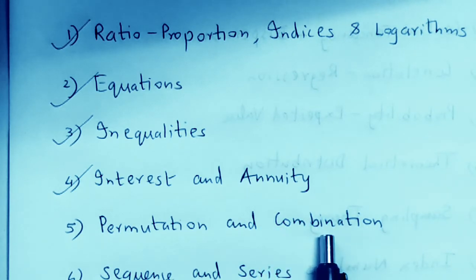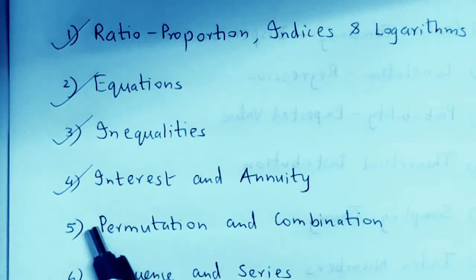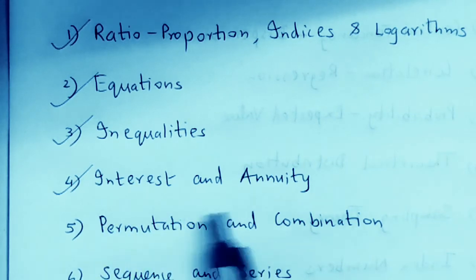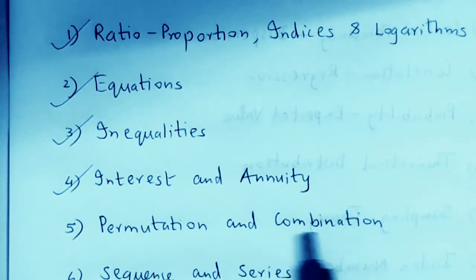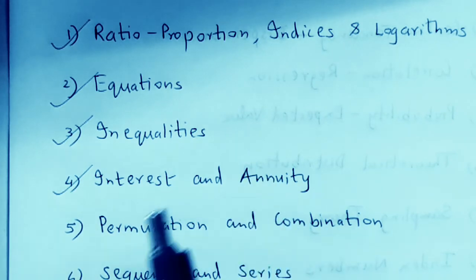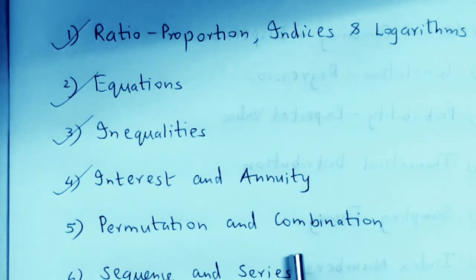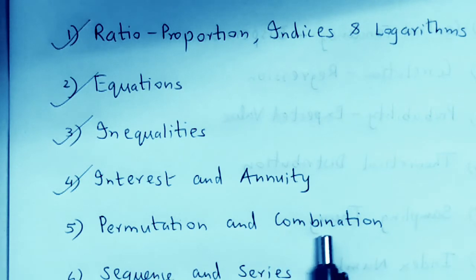Combination involves selection sums and permutation involves arrangement. For combination, just understand the formula nCr and a few properties. You can leave permutation as an option, but at least be able to solve the basic combination sums.